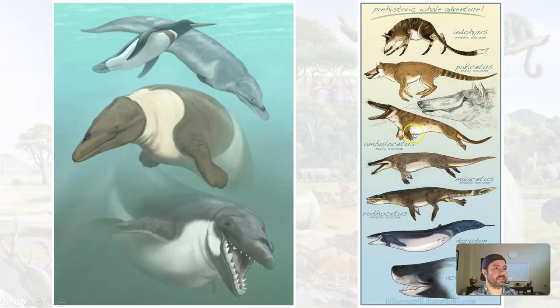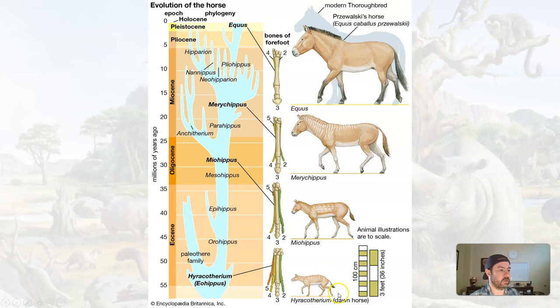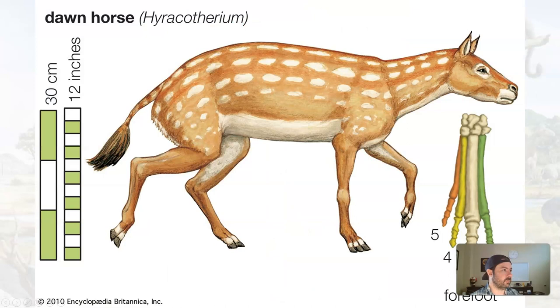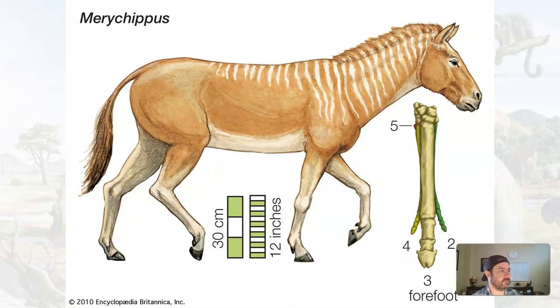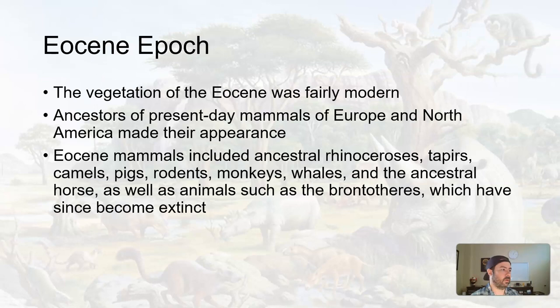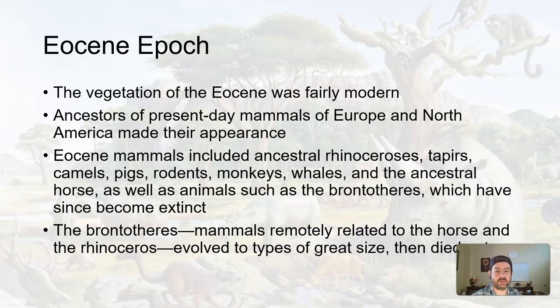The horse evolves from the early little dawn horse to what we have today. It kind of looks more like a deer-dog thing starting out, and as it continues to evolve it starts to take the form until we get to the modern horse. The Brontotheres — mammals kind of related to horses and to rhinoceros — evolved to great size, as many animals did.